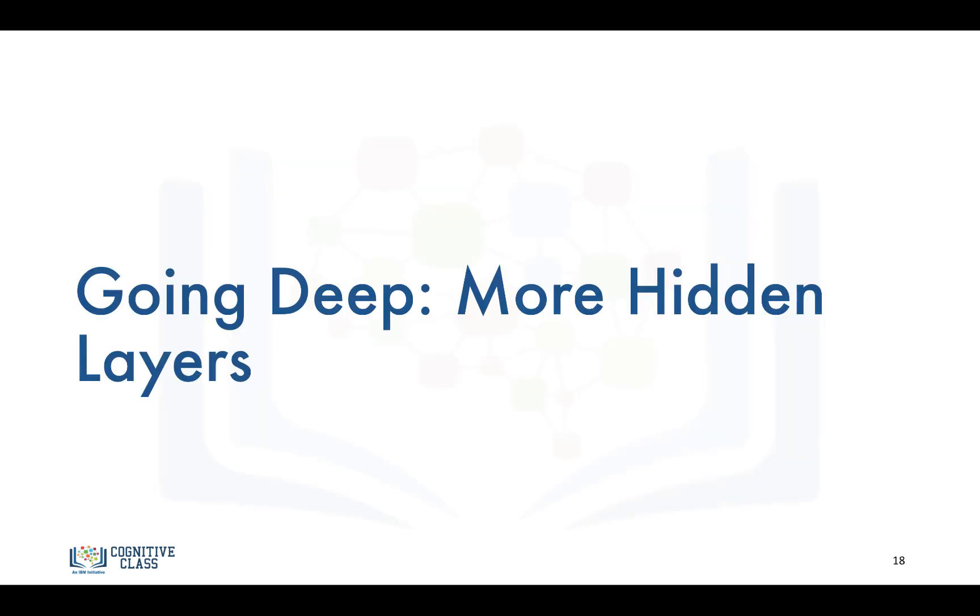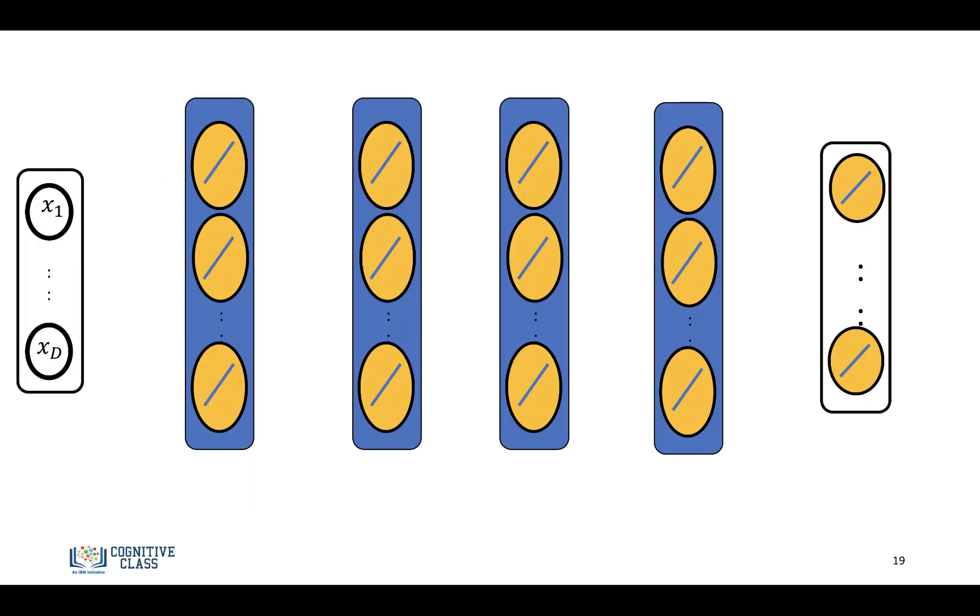You can also go deep with neural networks. This means we're just adding more hidden layers. Everything's the same. We take our input feature and pass it to the first hidden layer. Then the output to this hidden layer is passed to the second hidden layer, until we get to the final.